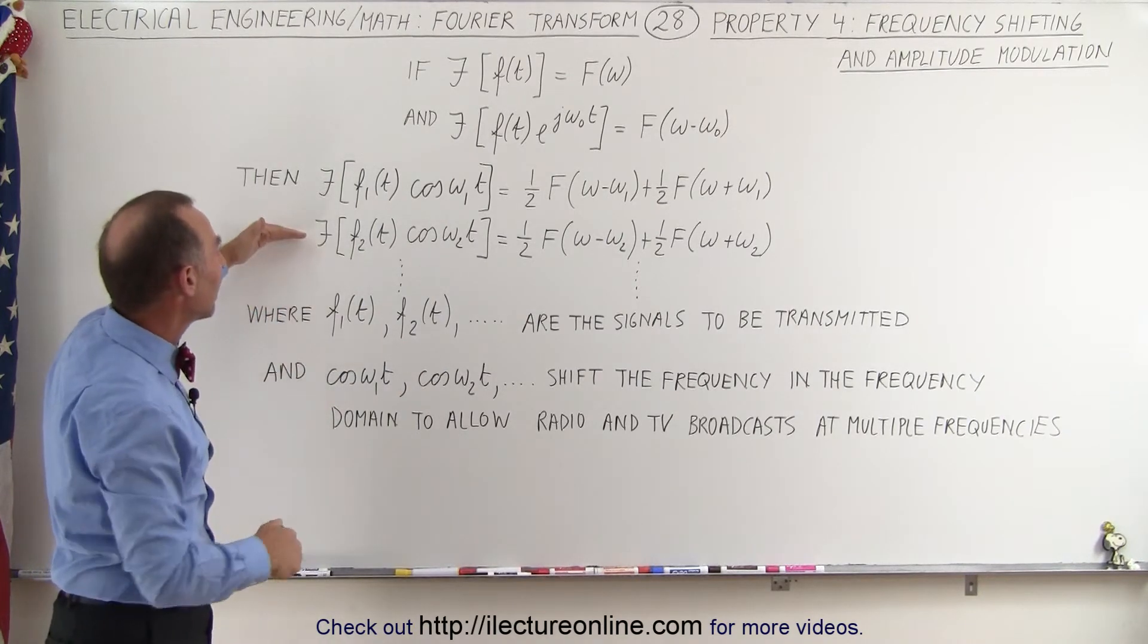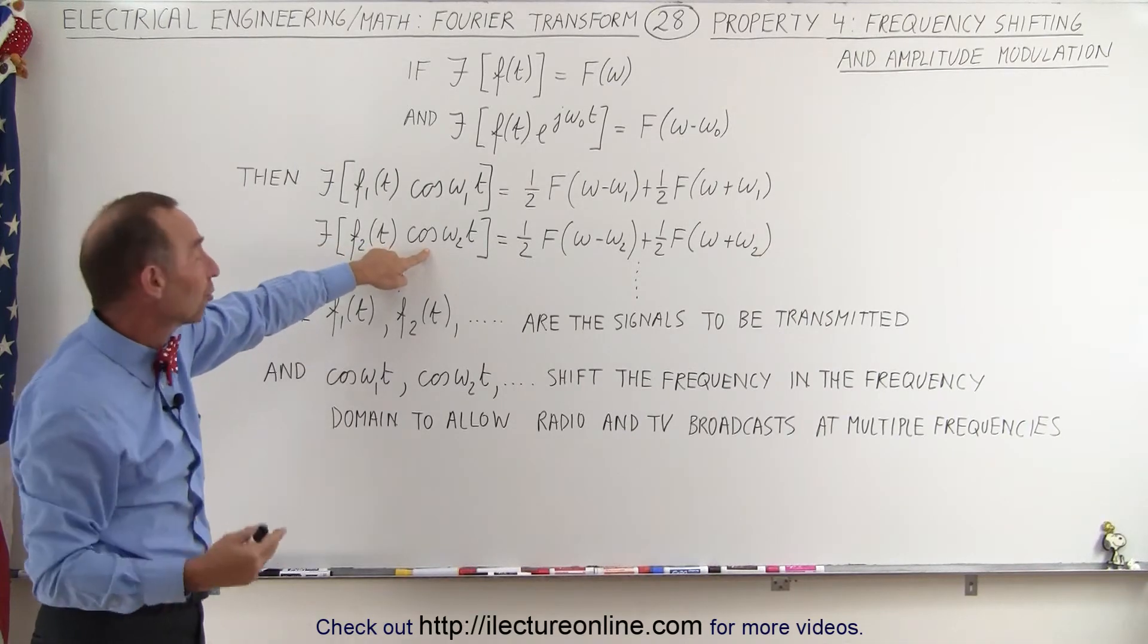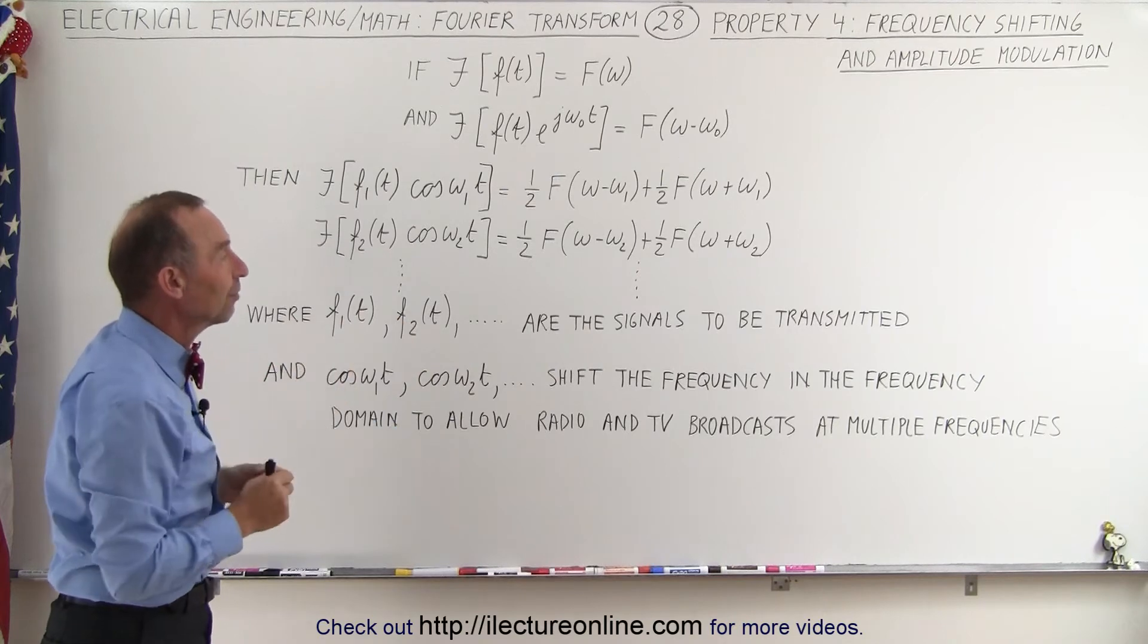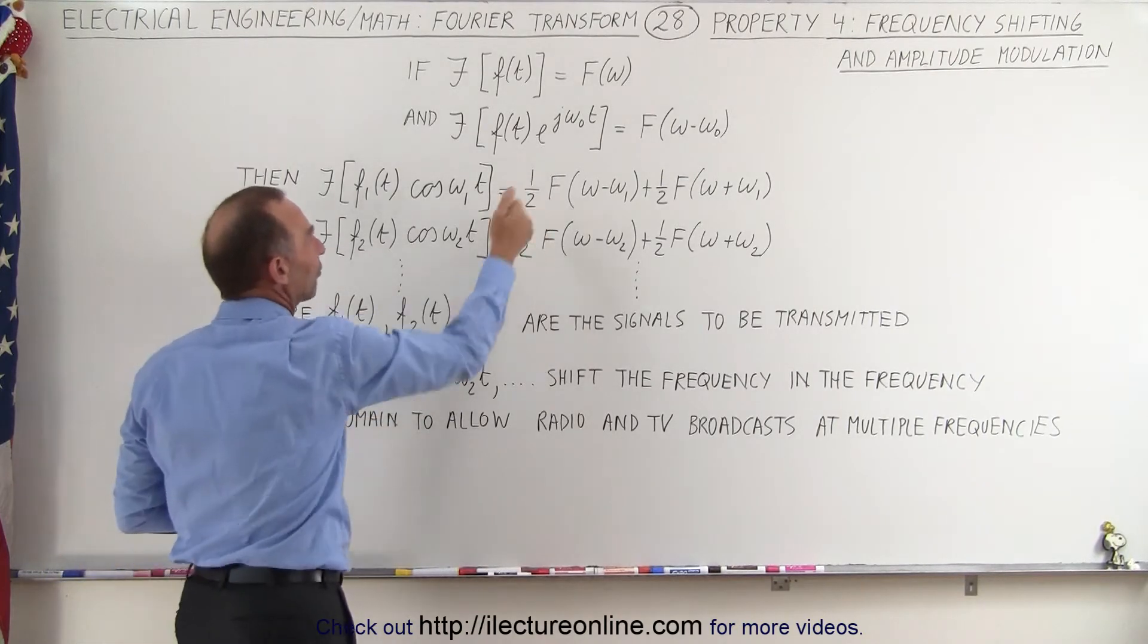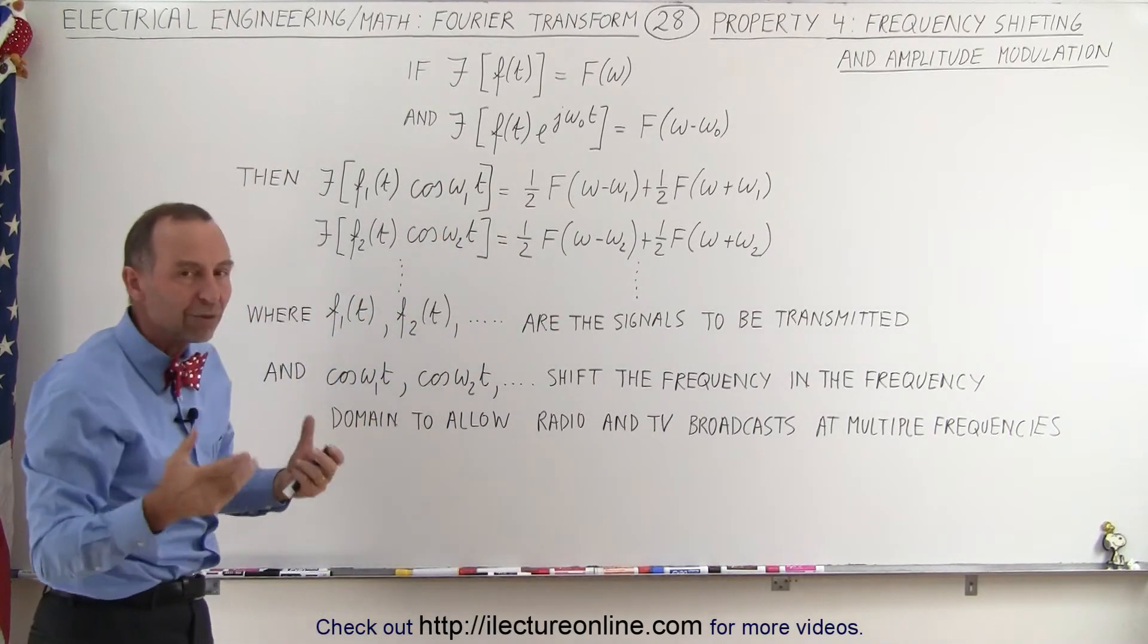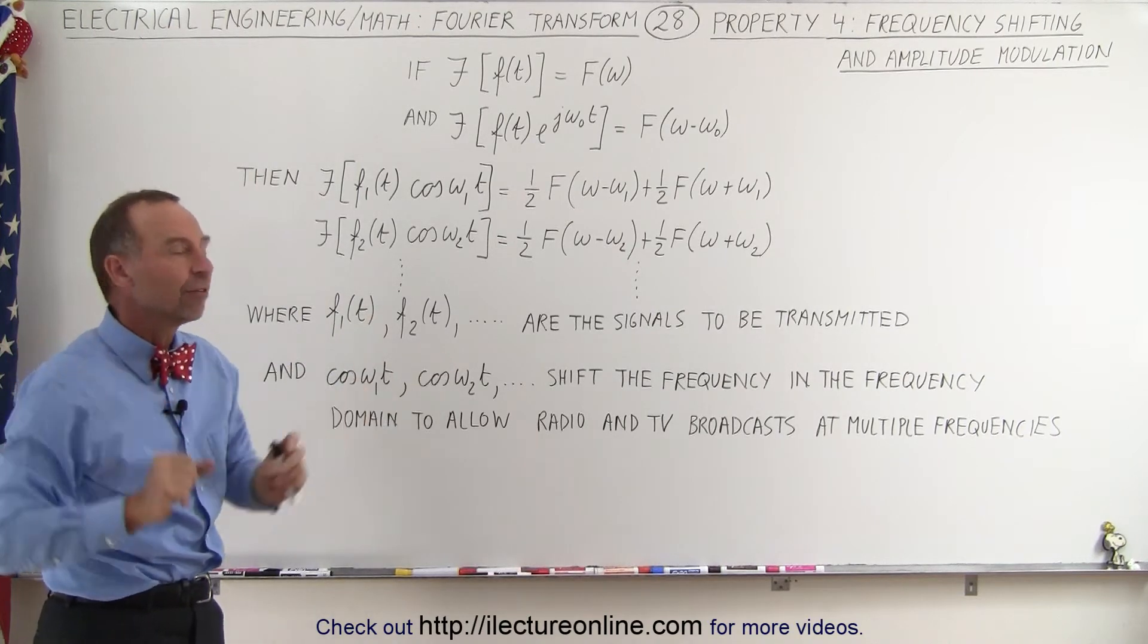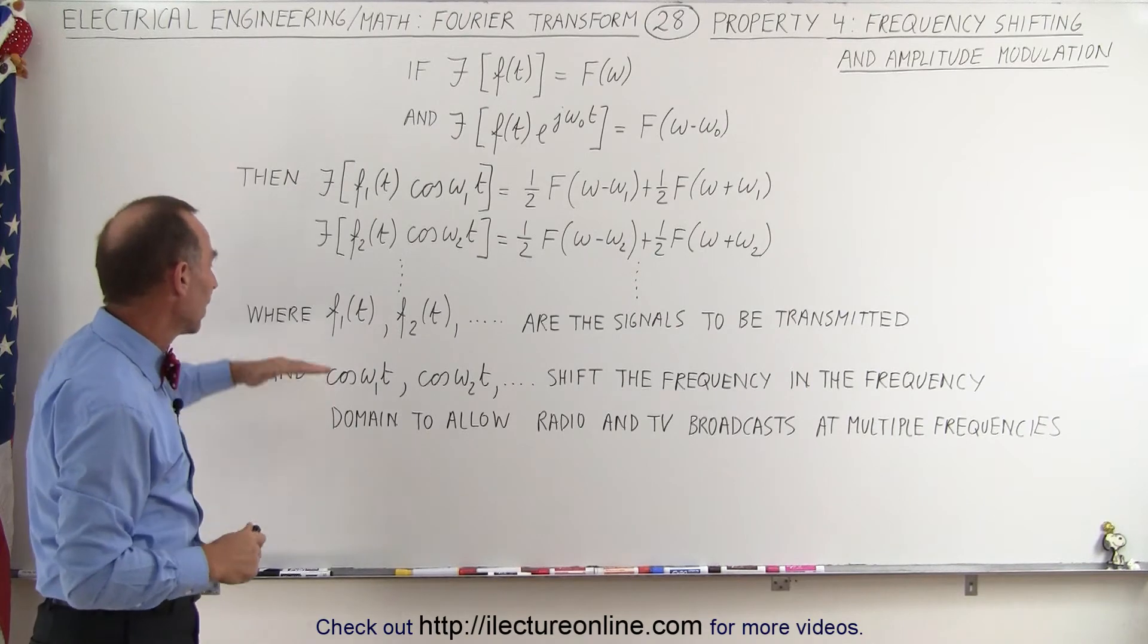Then we can take a different function in the time domain and multiply times a different cosine with a different frequency and have that shift by a different amount. So the shift will be different than we have from the first one. And then we can repeat that over and over again, so we keep shifting the signal by a different amount of frequency so they don't overlap and don't interfere with one another.